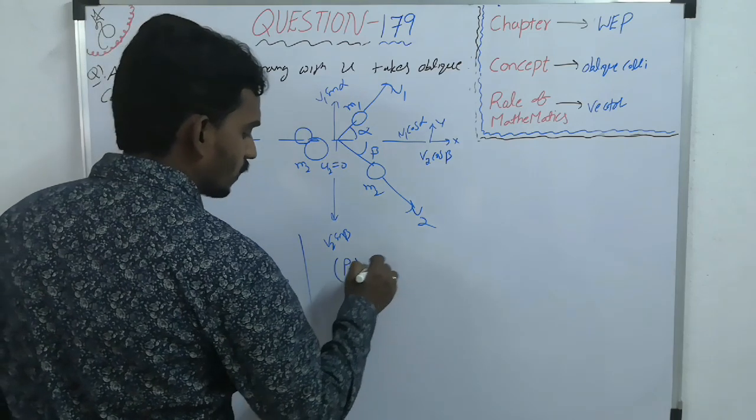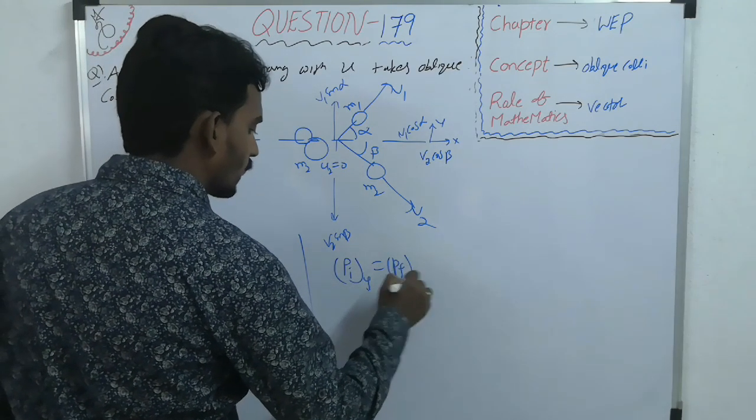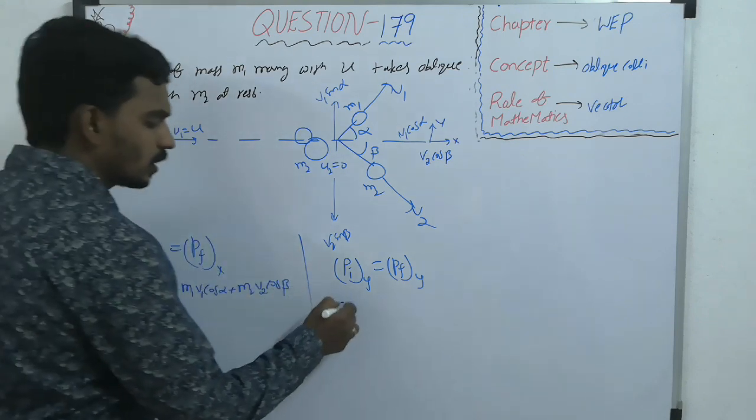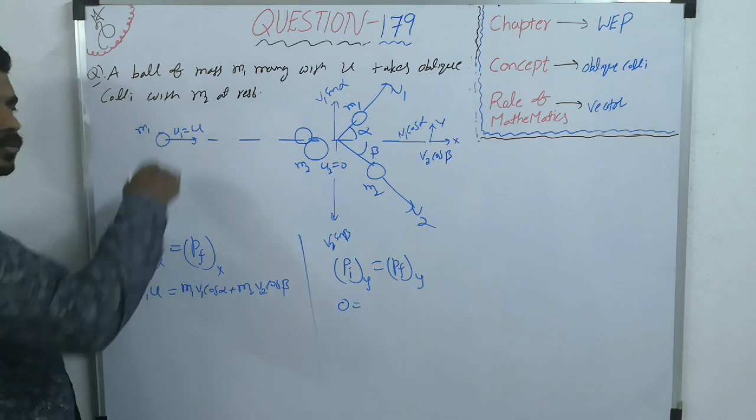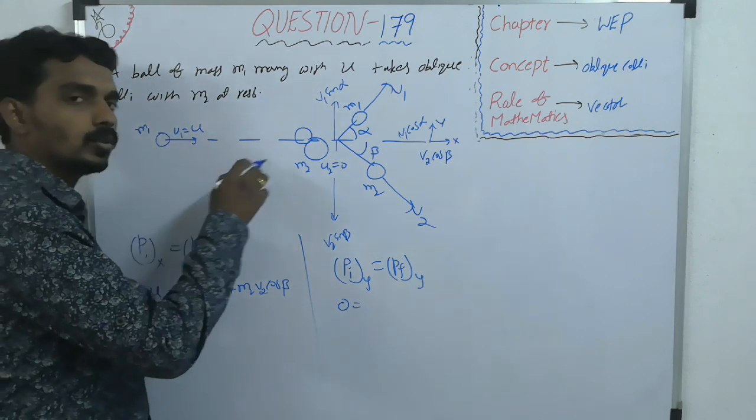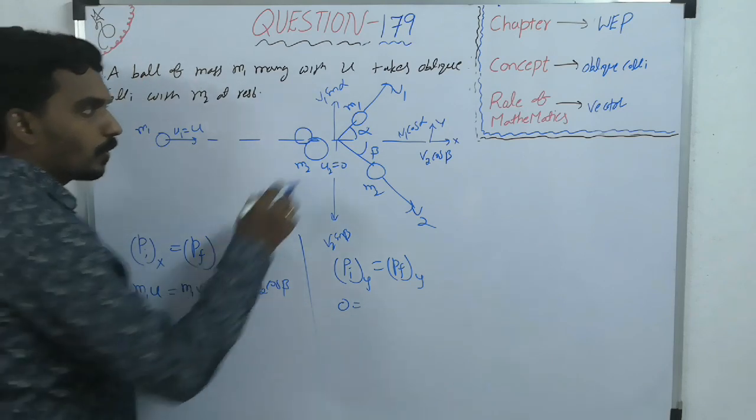Initial linear momentum should be equal to final linear momentum. Now initial linear momentum along Y is zero, no particle was moving along Y, only particle was moving is M1, that too along X. So finally,